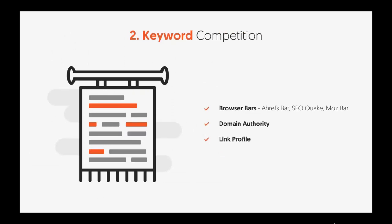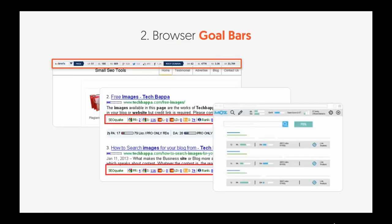You can use browser bars to assess competition — Moz bar, Ahrefs bar, SEO Quake — many of which are free. Look at domain authority and link profile. If sites ranking for your target keywords have lower domain authority and fewer backlinks, it means it's easier to outrank them. I like the Ahrefs bar — look at URL rating, domain rating, backlinks, and root domains. The lower the UR, BL, RD, and DR, the better off you are.